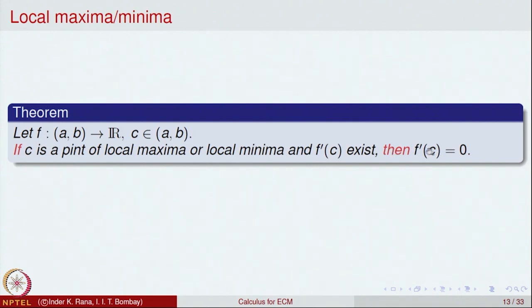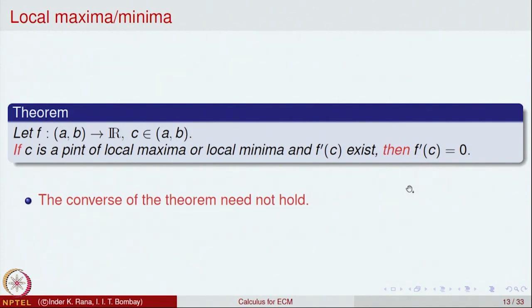This is a necessary condition — the condition that the derivative equals 0 is necessary for the function to have a local maxima or minima at the point, provided the derivative exists. But this theorem is only a necessary condition; it may not be sufficient, meaning the converse need not hold. A function may be differentiable at a point with derivative existing, but the point c may not be a point of local maxima or minima.